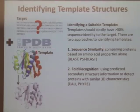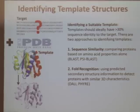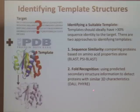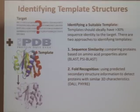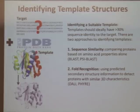There are two approaches generally. You can use sequence similarity — if you BLAST or CyBLAST your protein, it will give you suggestions of proteins with similar sequence identity. Or you can use fold recognition servers. DALI and FHIR are two fold recognition servers that use predicted secondary structure information to detect proteins with similar 3D characteristics. It's not always the case that proteins with similar sequence identity have similar 3D characteristics, so it's good to use a variety of methods to identify a good template.